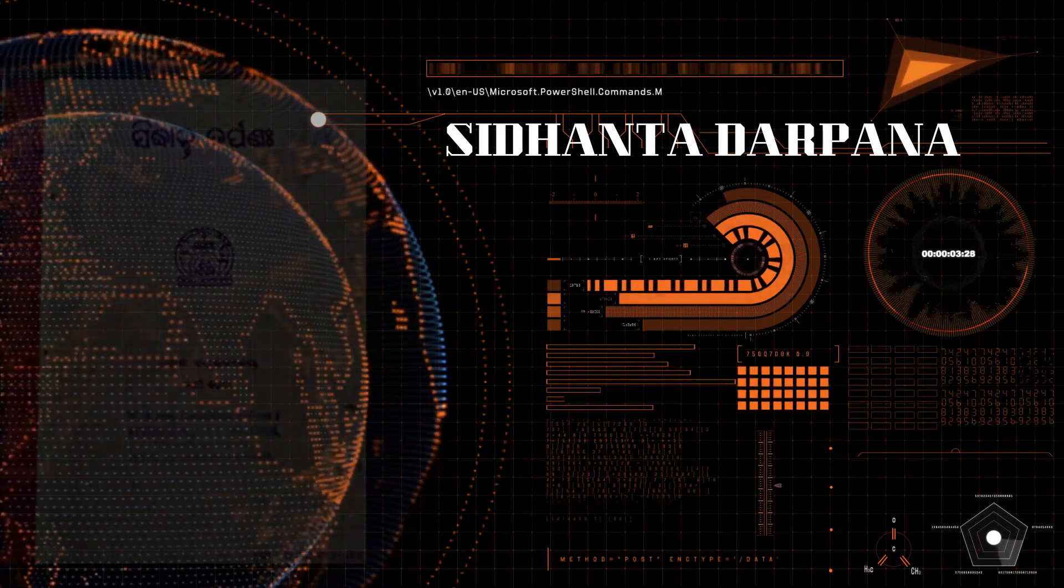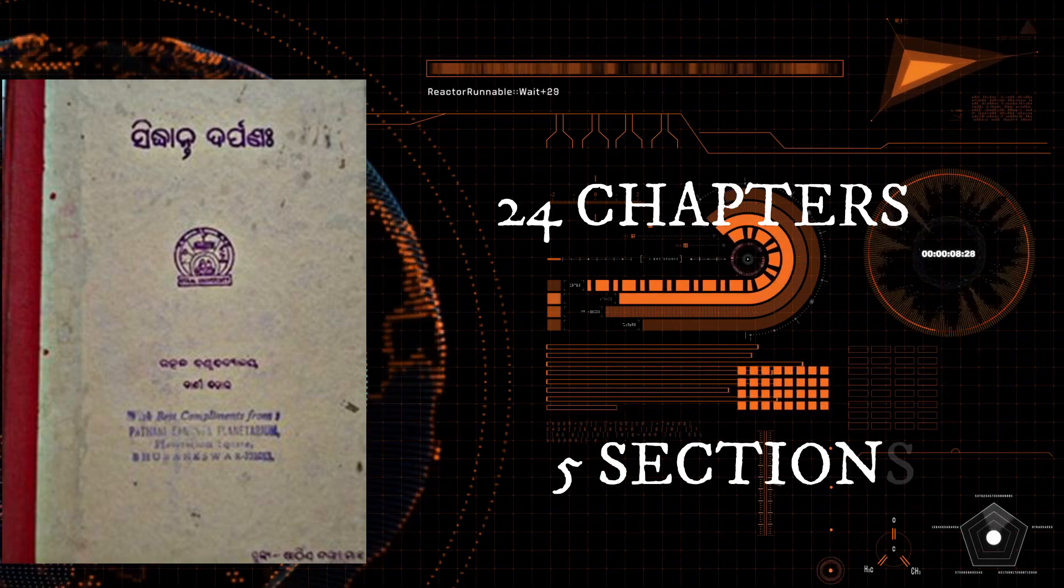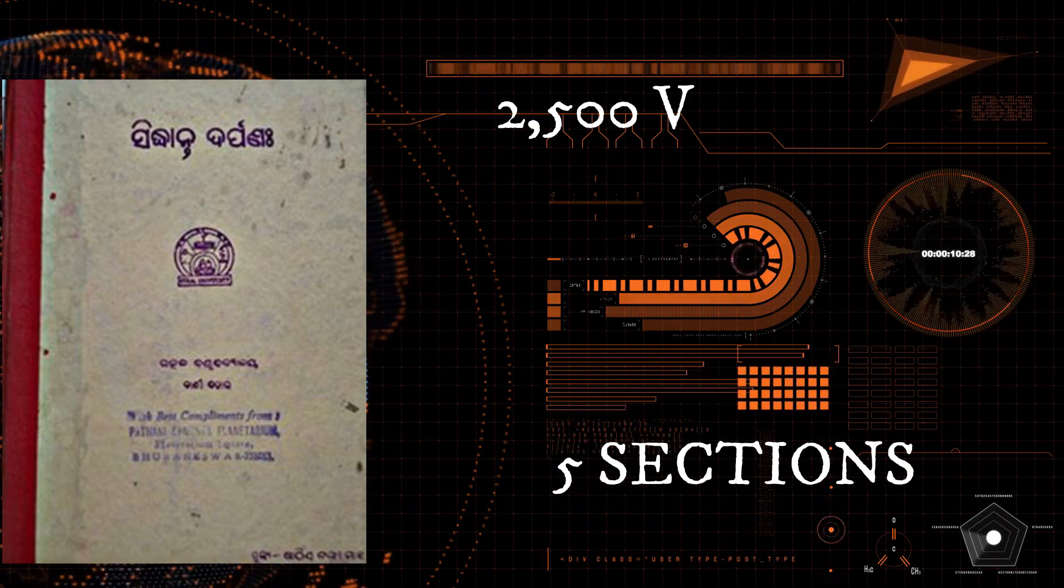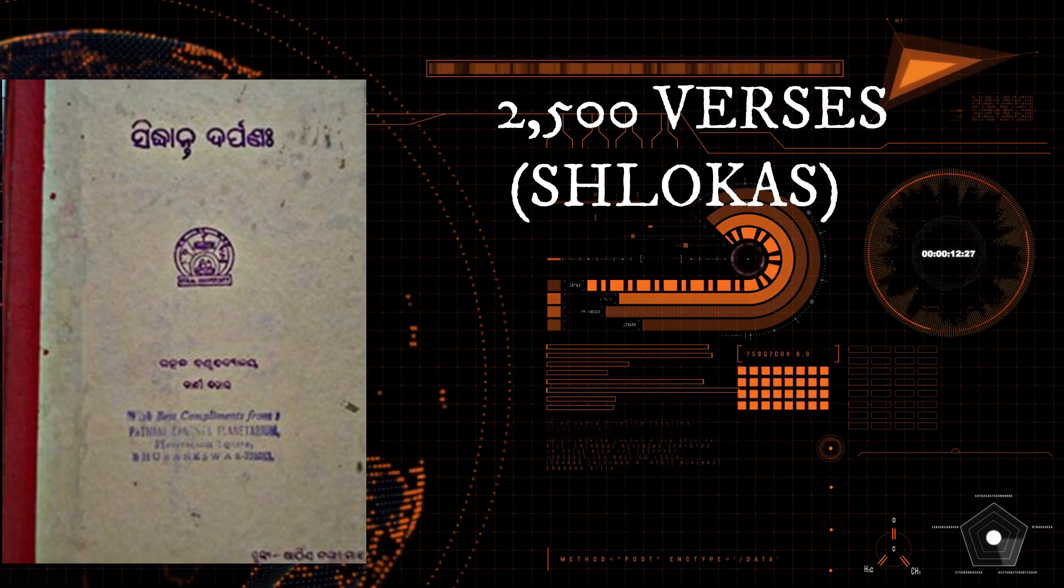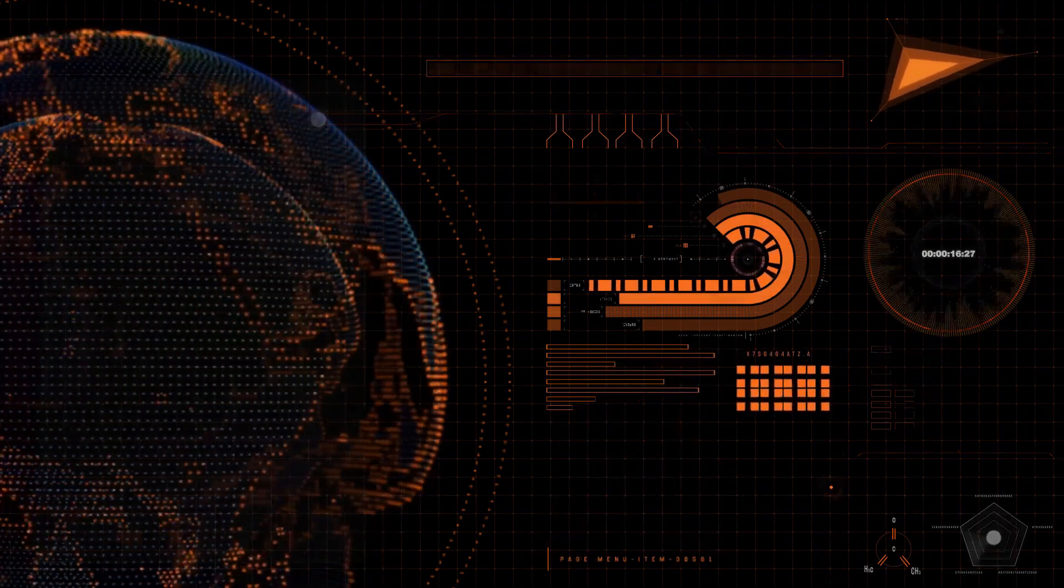This book has 24 chapters divided in 5 sections with a total of 2500 verses or slokas. The 5 sections of the book are as follows.